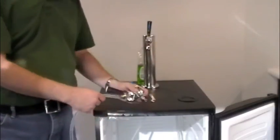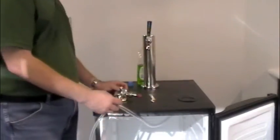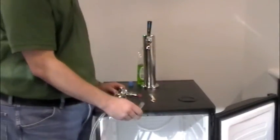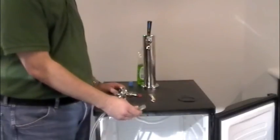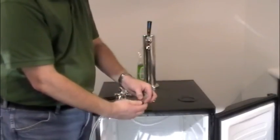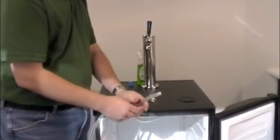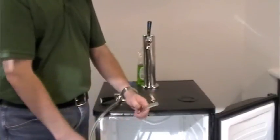Then what you're going to do, you're going to go back in here and you're going to grab your gas line, remember this goes through the back of the kegerator, slide your clamp on, don't let it slide back in there otherwise you're digging for it.